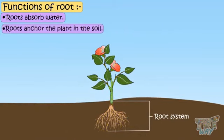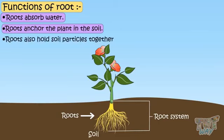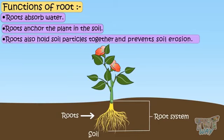Roots anchor the plant into the soil. Roots also hold soil particles together that prevents the soil from being washed away with rain or storm. So roots are the support system of the plant.